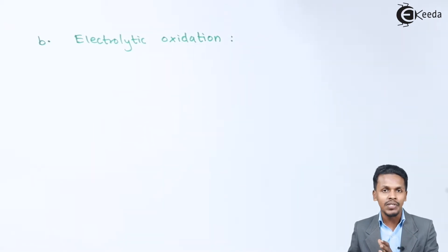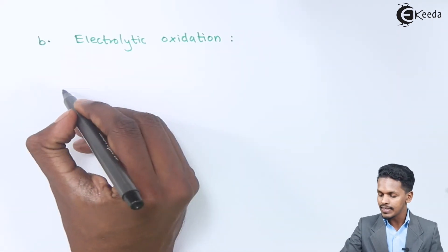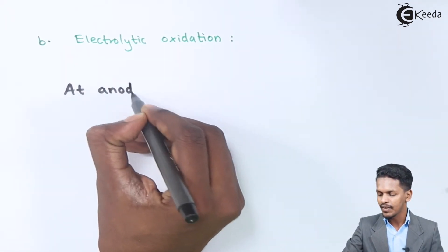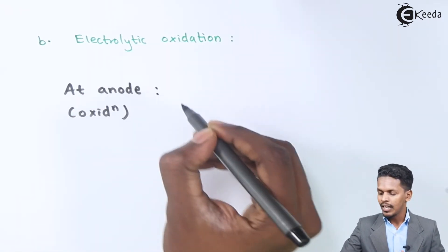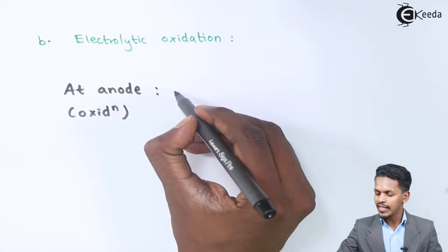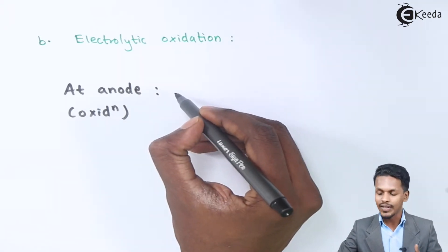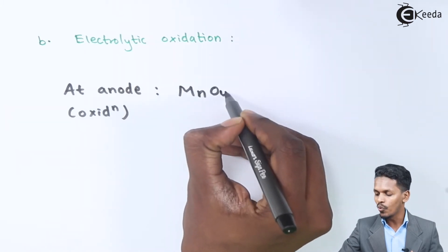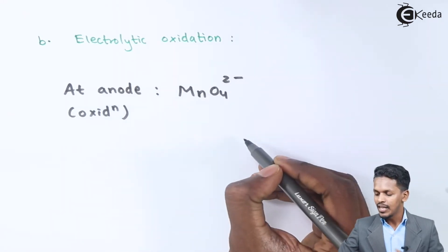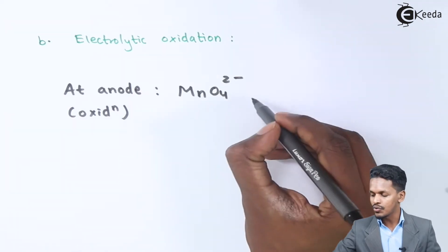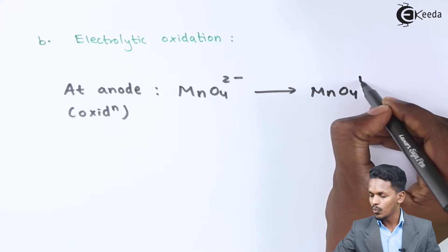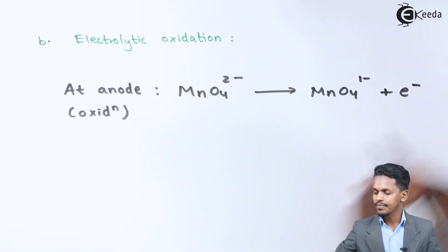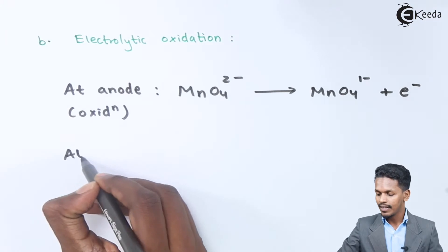There are two kinds of reactions: one at the anode and one at the cathode. At the anode, oxidation occurs. The MnO4²⁻ ion obtained from K2MnO4 undergoes oxidation to give MnO4⁻ plus one electron. At the cathode, reduction always occurs. Since K2MnO4 is dissolved in water, water molecules provide H⁺ and OH⁻ ions in equilibrium.